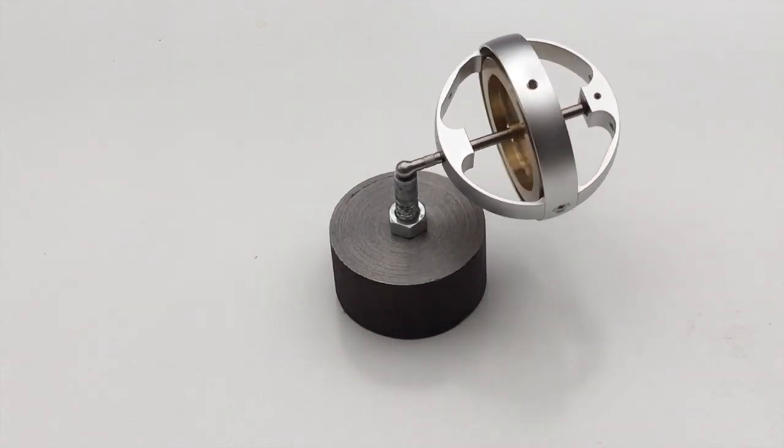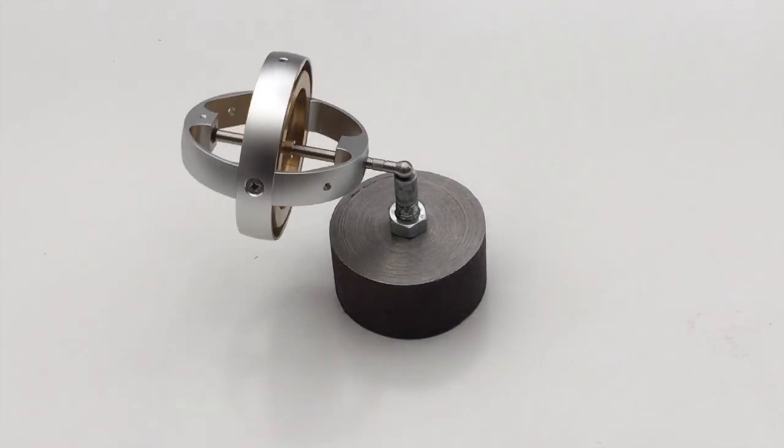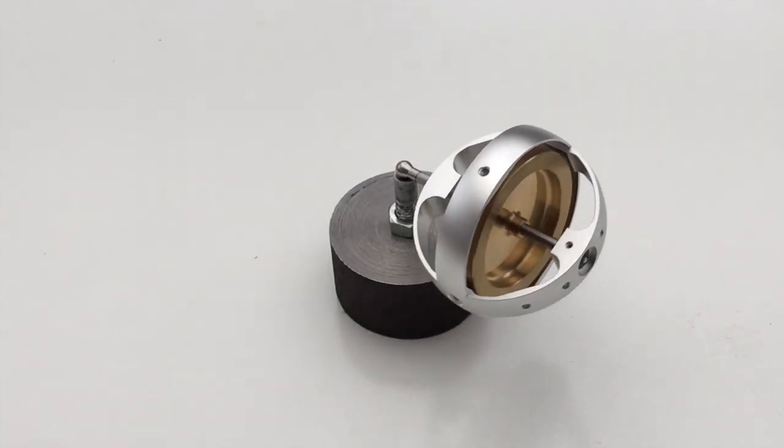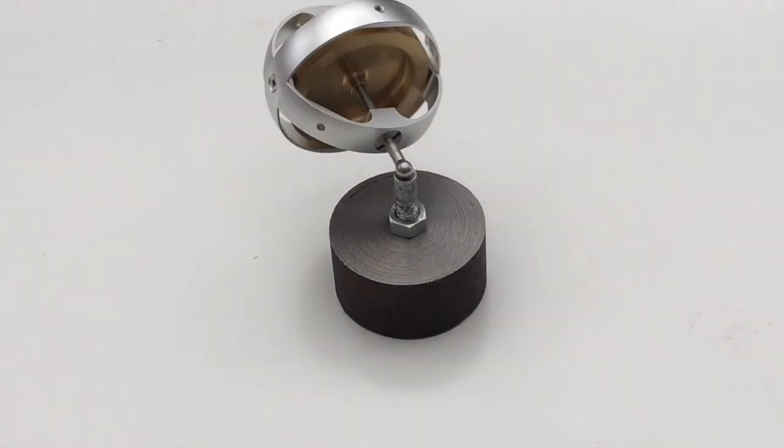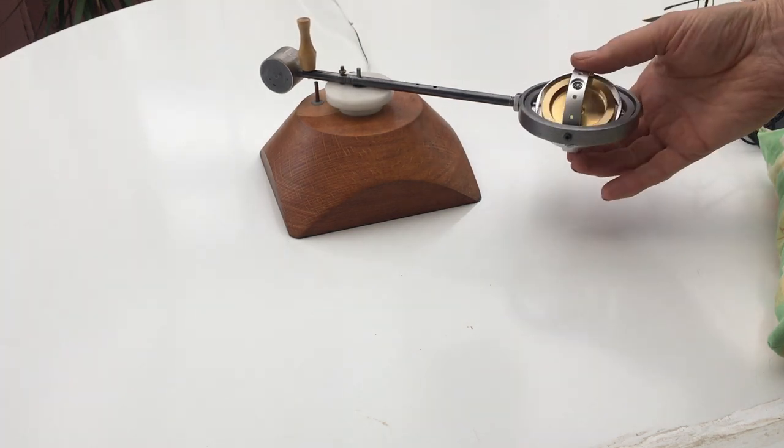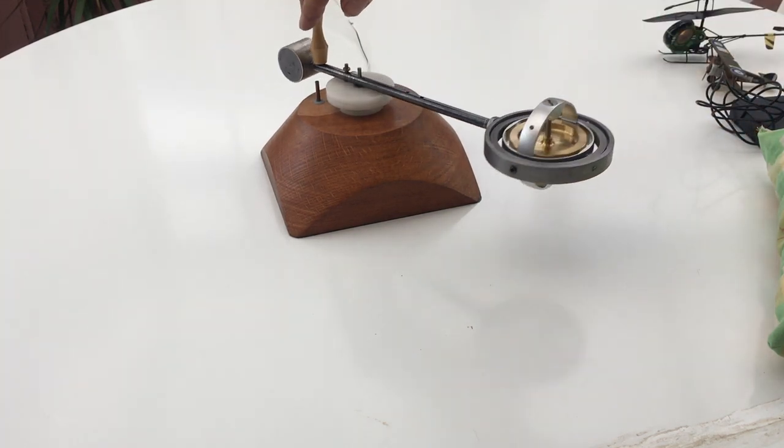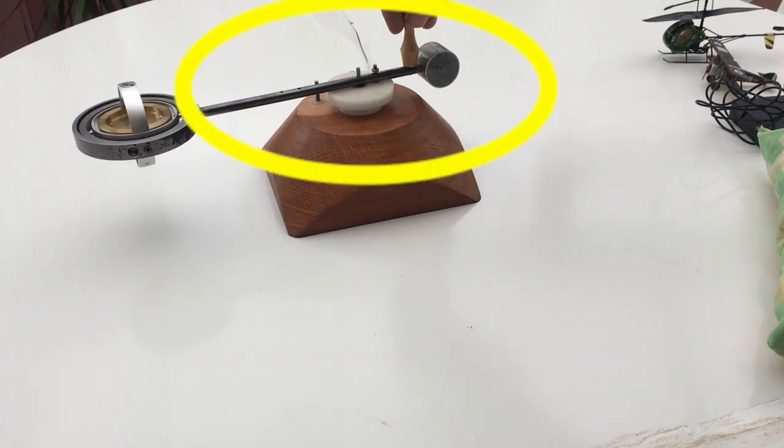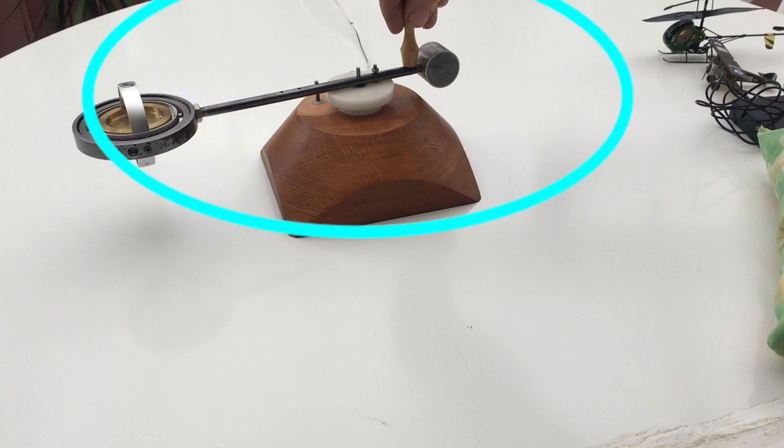If we want to predict the direction of this precession, then there is one more factor to consider. When a gyroscope travels around an orbit, it has an inside and an outside edge, which are turning in opposite directions.